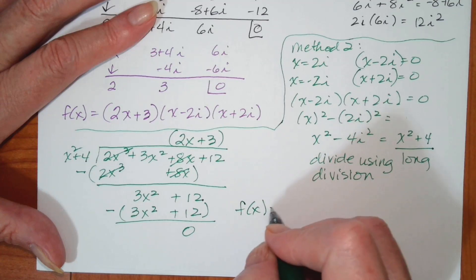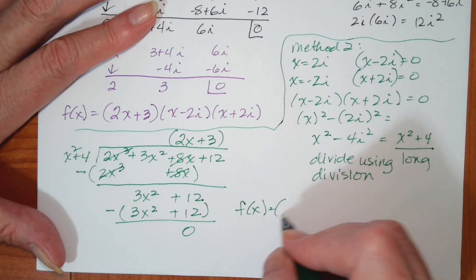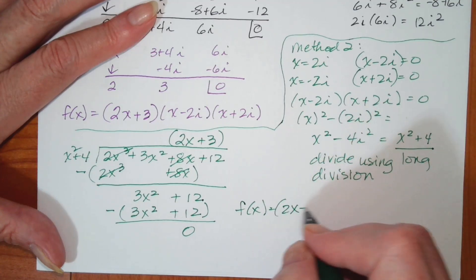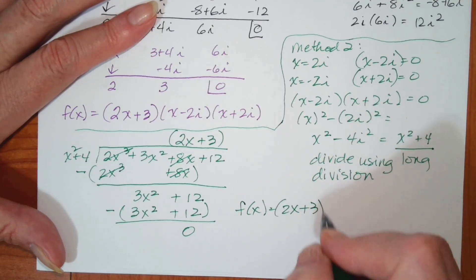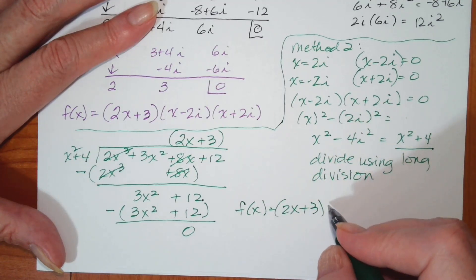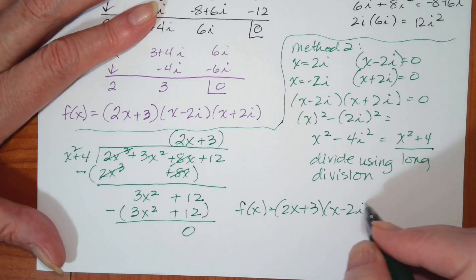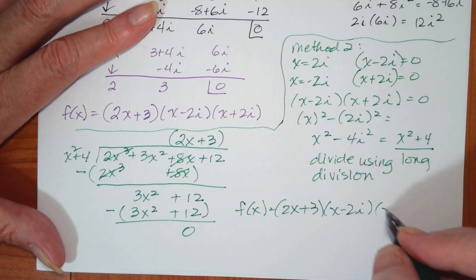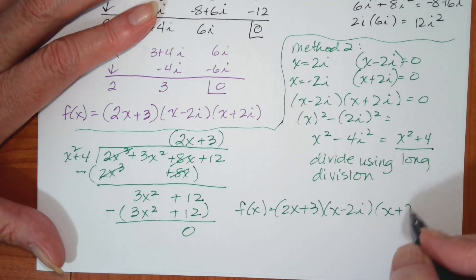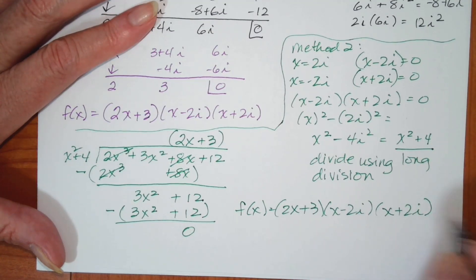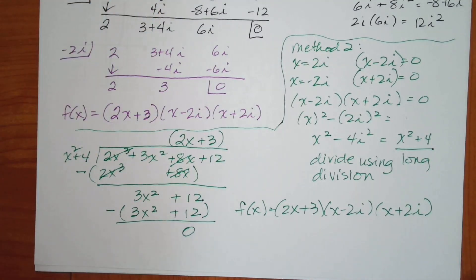So f of x equals 2x plus 3 times x minus 2i times x plus 2i. Either method works.